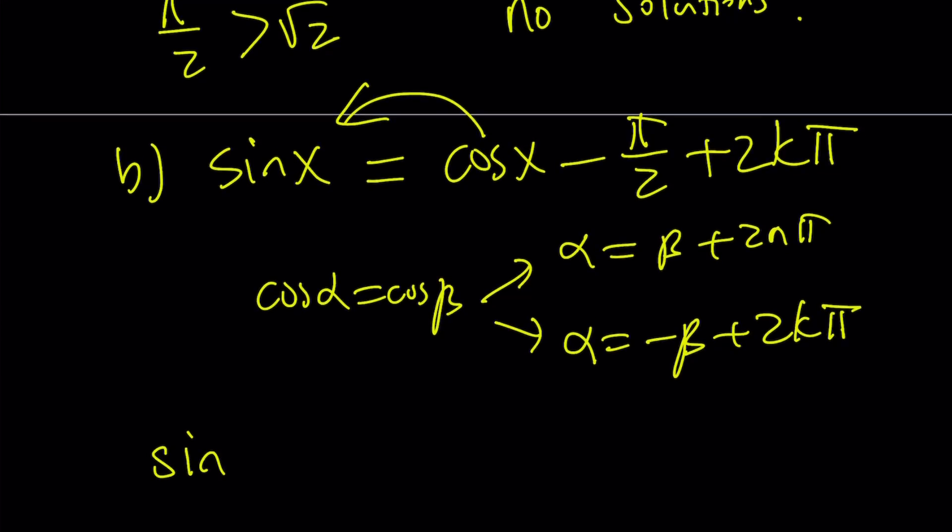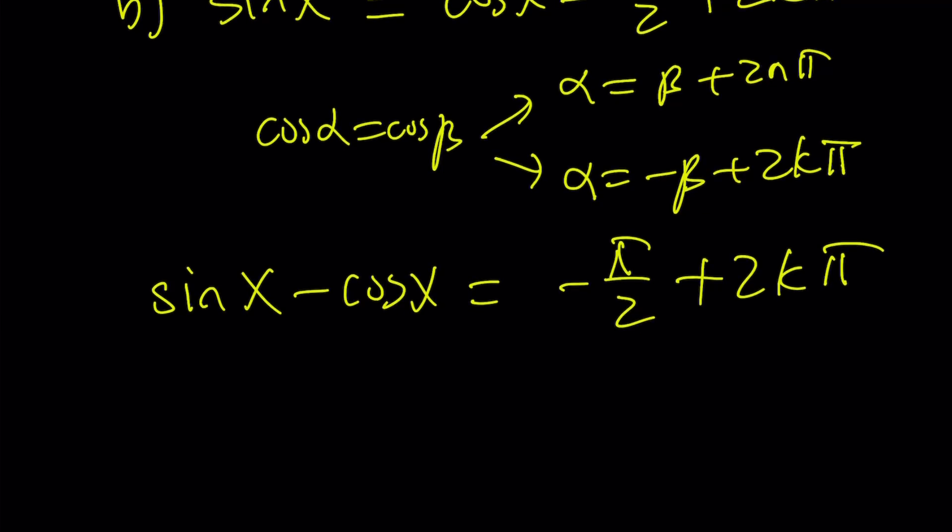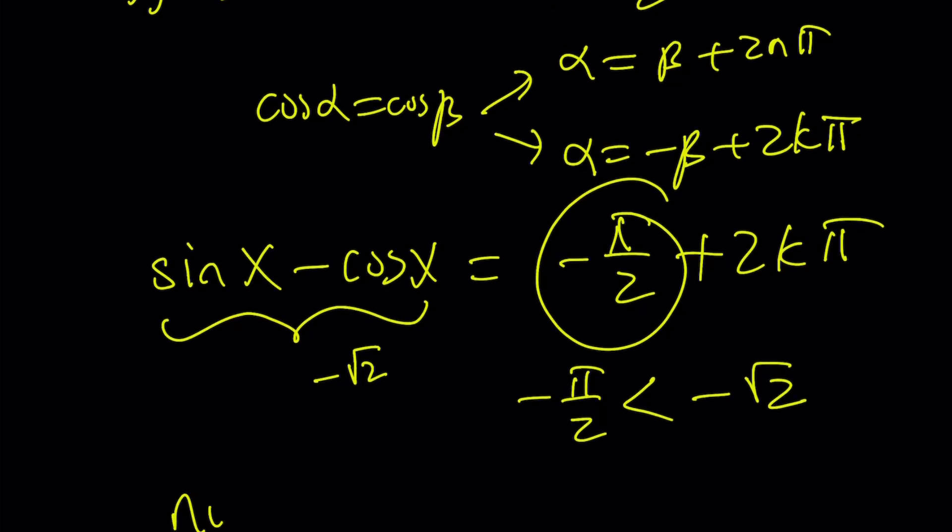So if you proceed with this one, like before, subtract cosine x from both sides. You're going to get sin x minus cos x equals negative π/2 plus 2kπ. Now, we didn't do it, but it's very similar. To find the minimum and maximum value for sin x minus cos x, you're going to get the same thing, pretty much. The minimum value for this is going to be negative root 2. But negative π/2 is definitely less than that because π/2 is greater than root 2. Therefore, this branch is also impossible. Therefore, there are no solutions to this equation.